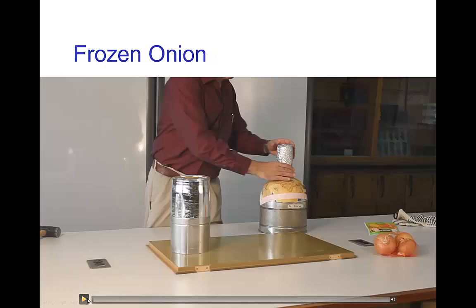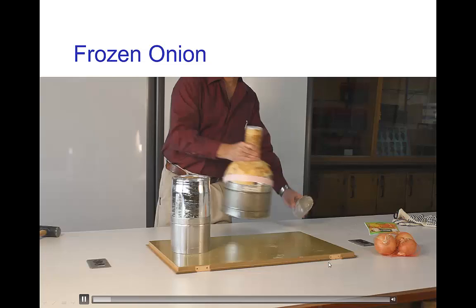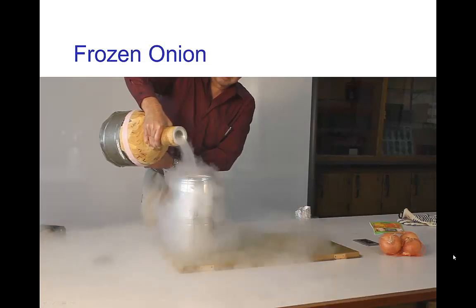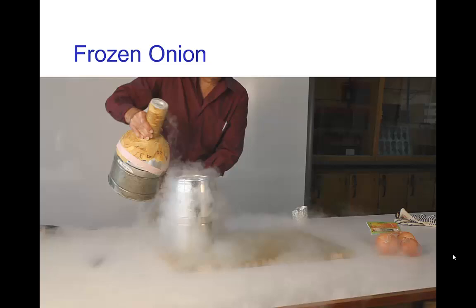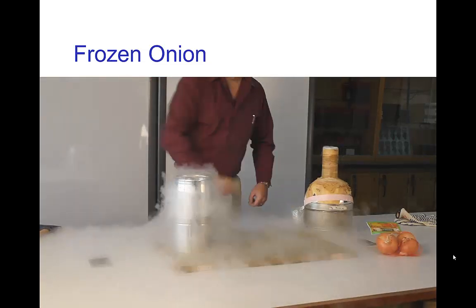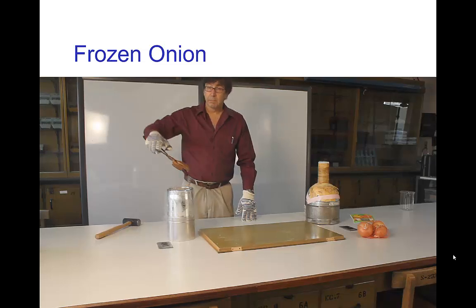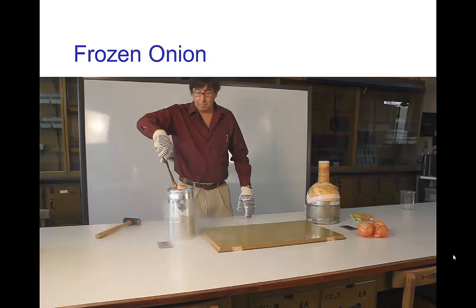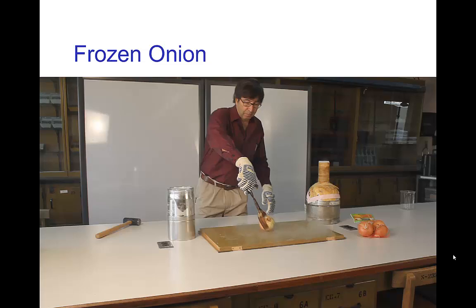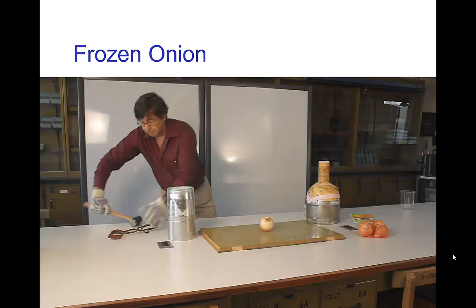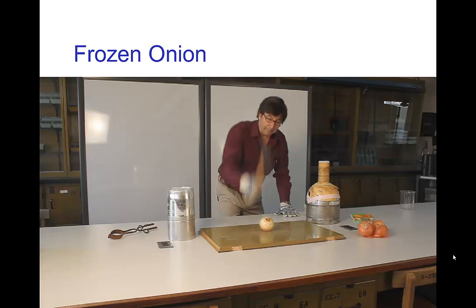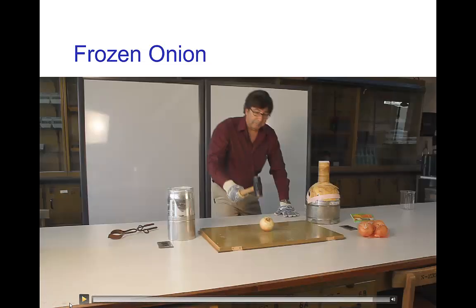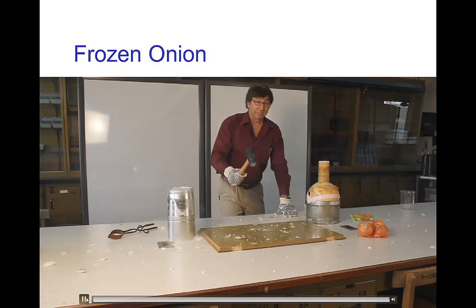One more demonstration: there's an onion that's been placed inside a container. We're pouring liquid nitrogen into it to freeze the onion. We let that sit for a couple of minutes to get it nice and cold. Now we're going to take out the onion. Listen very carefully to the sound when we smash this onion with a hammer. Let's play that again.